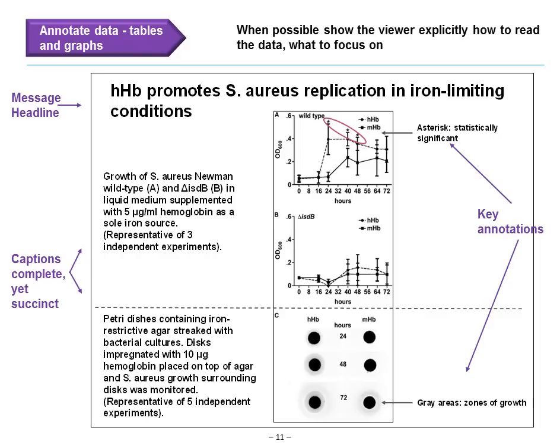We then have key annotations: we point to the fact that on graph A there are asterisks above the statistical bars, indicating that in those examples there are statistically significant differences in growth patterns. We also have an annotation on the second set of experiments focusing on the gray areas, which represent the zones of growth of Staphylococcus aureus.